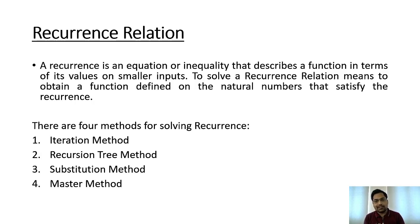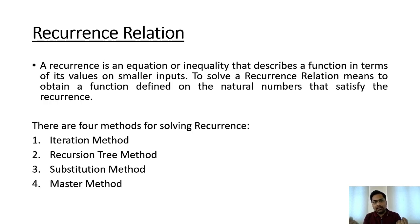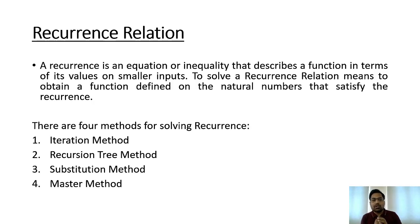For recursion, the data structure being used in the background is a stack. The auxiliary space it takes is N, as studied in previous lectures. The stack uses N indices, so the auxiliary space complexity is N. Auxiliary space is not constant because of recursion, which is why it is N.